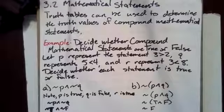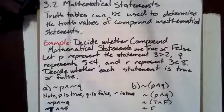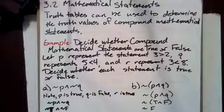In this video, we'll use truth tables to determine the truth values of compound mathematical statements. For example, we'll decide whether these compound mathematical statements are true or false. Let P represent the statement 3 is greater than 2, Q represent 5 is less than 4, and R represent 3 is less than 8. Decide whether each statement is true or false.